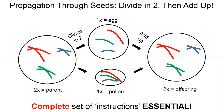So when plants make offspring via seed, to keep the set of instruction booklets constant — not to get them doubling with each generation — plants first divide all their instruction booklets equally between two cells, which become egg and pollen. Here the parent has six chromosomes: two green, two blue, two red. They divide them into two cells; one becomes egg, one becomes pollen, and each has half the material — three chromosomes each. When these two come together, the offspring has exactly the same amount of genetic material as the parent: 2x, which we call diploid.